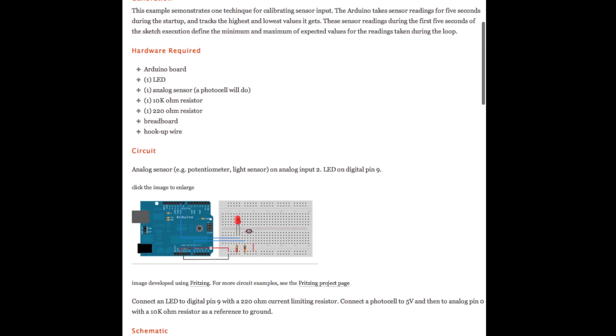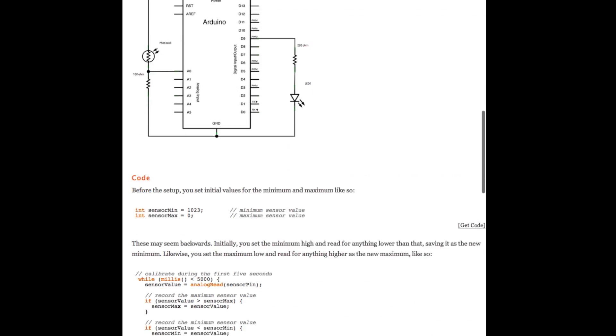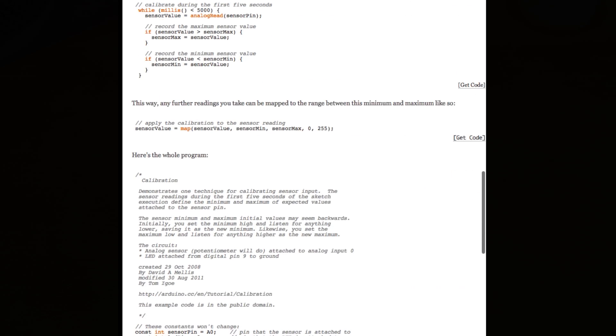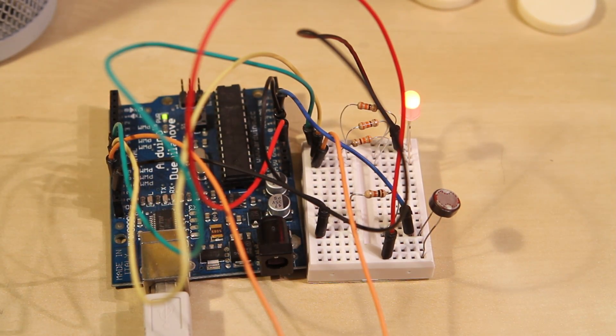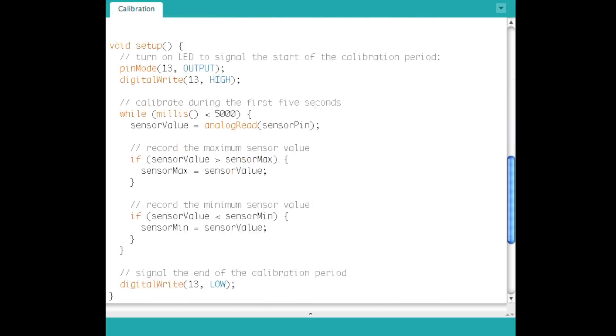I learned about calibration from Arduino's official example. I found it extremely useful, so let me show it to you. So here's the classic photo resistor and LED setup, and here's the code that will control it.